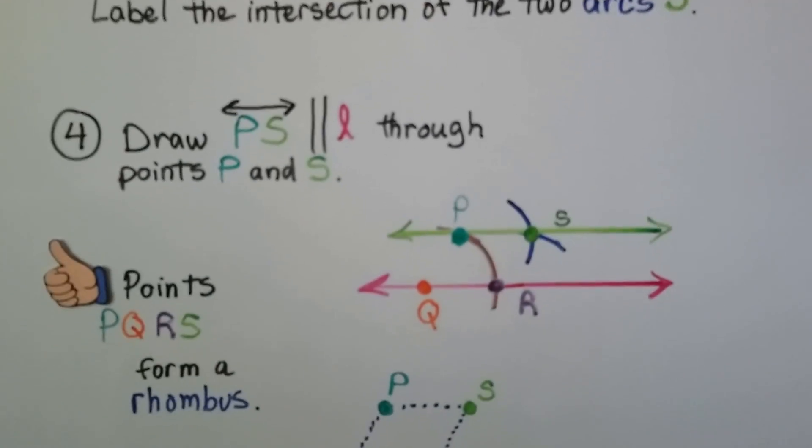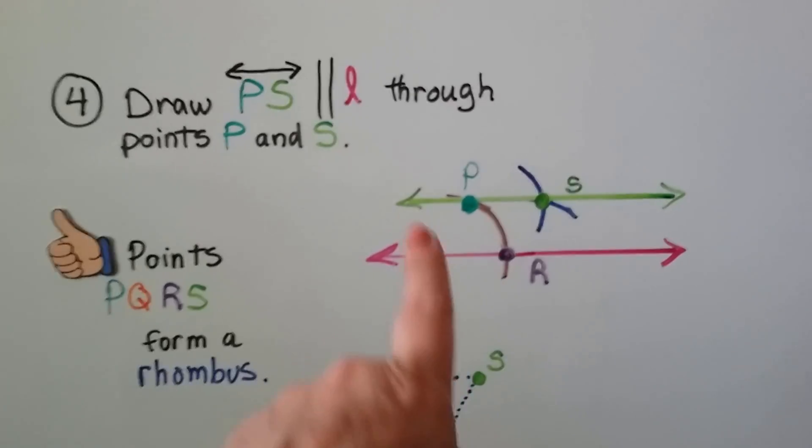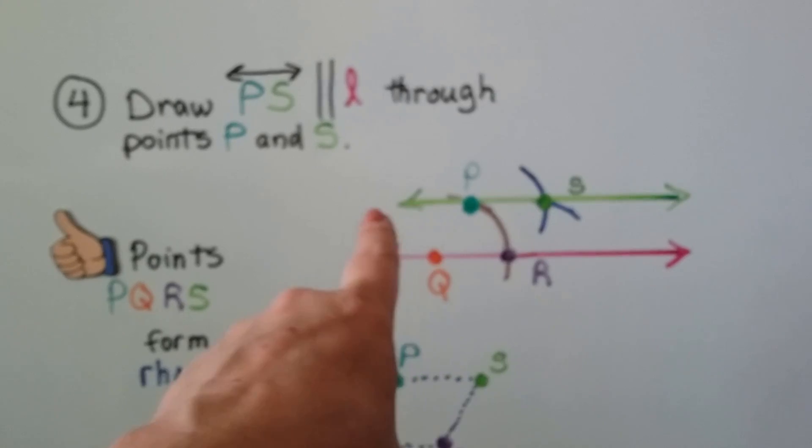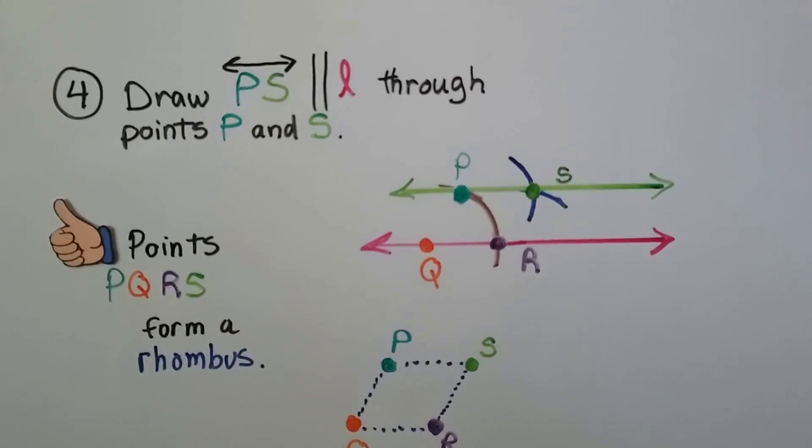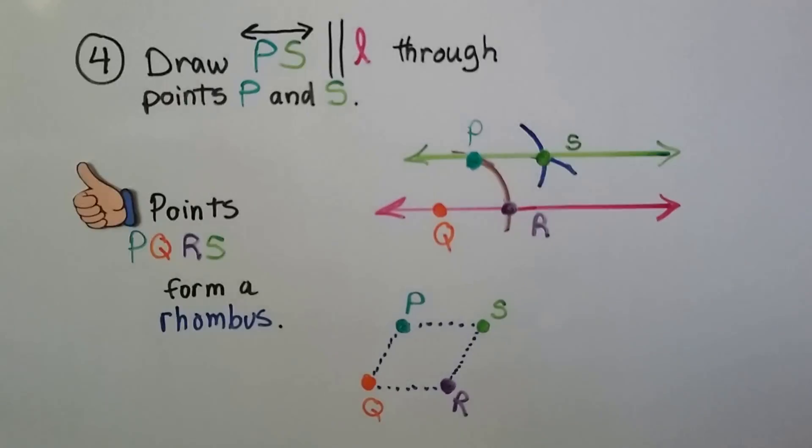Now we draw line PS parallel to L through points P and S. We just take a straight edge and draw a line through those two points P and S, and we make line PS. And points PQRS form a rhombus. You can see it.